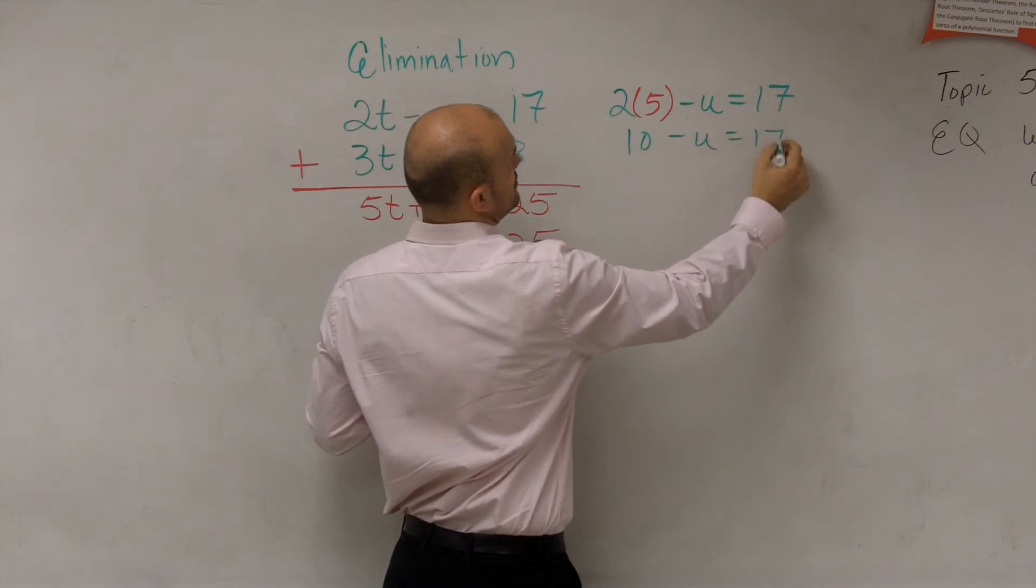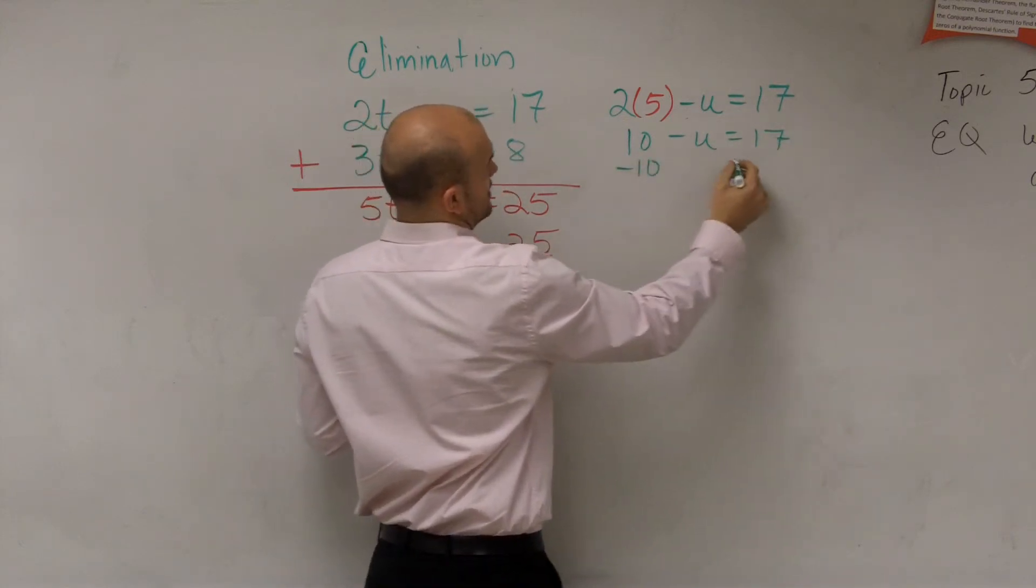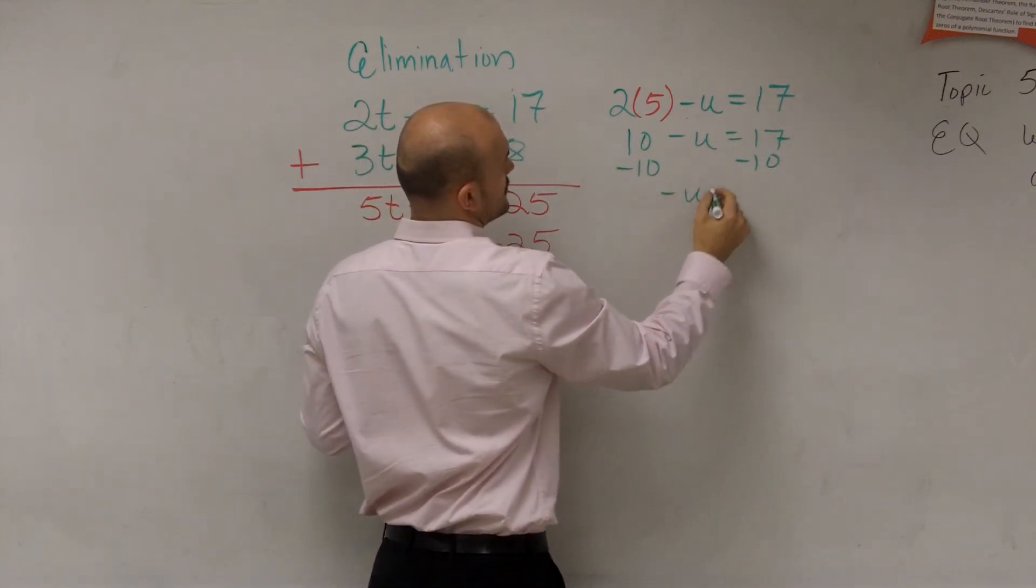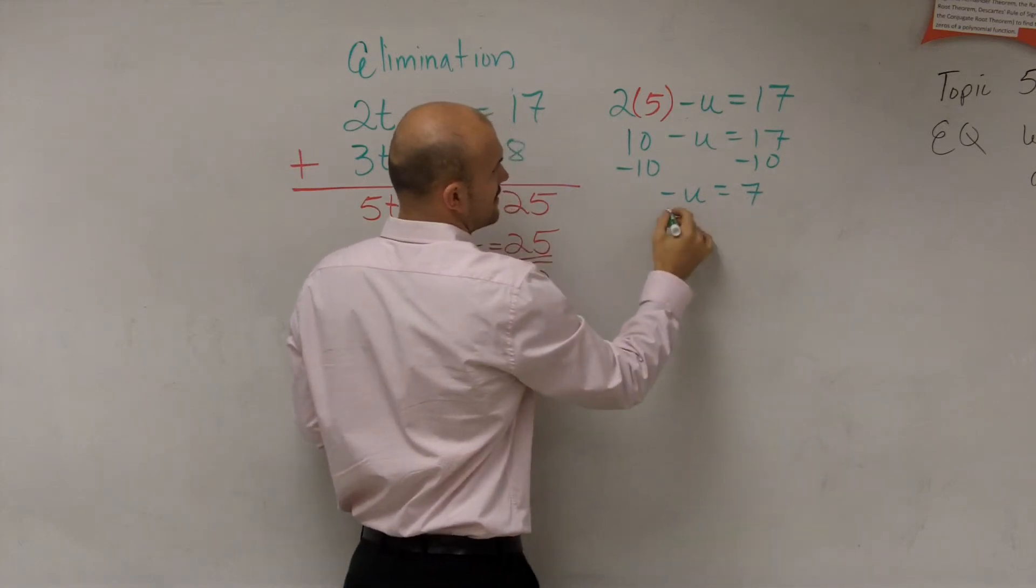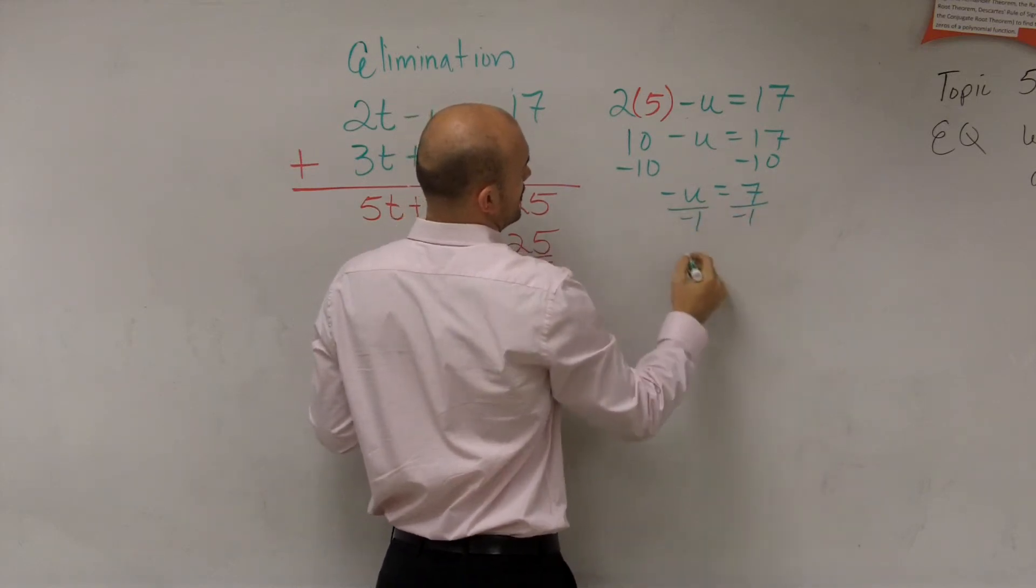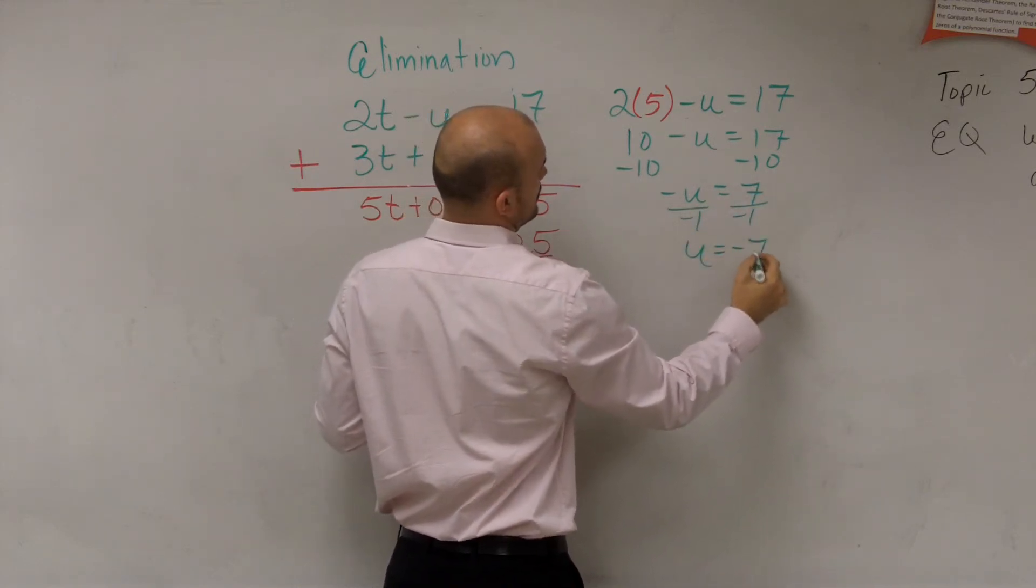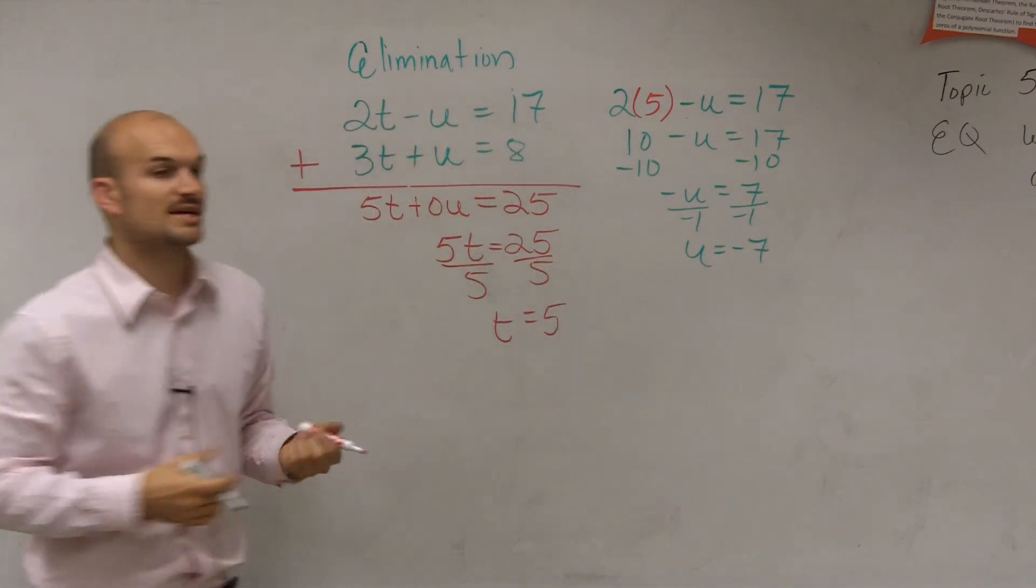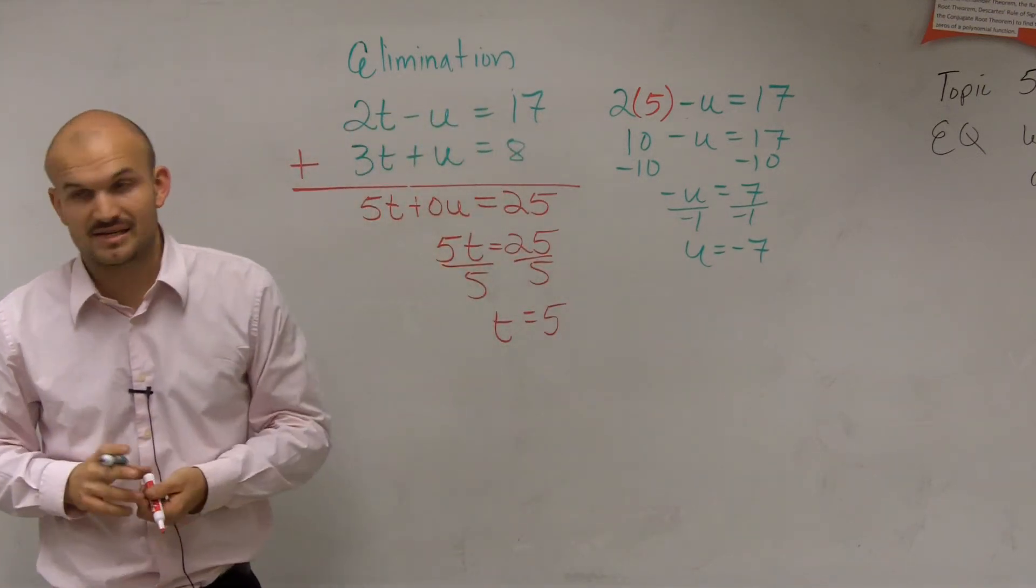Then let's just solve. 10 minus u equals 17. Subtract 10. Negative u equals positive 7. Divide by negative 1. u equals negative 7. If you guys did that by substitution, you get the exact same answer.